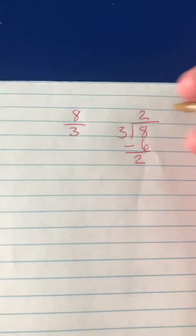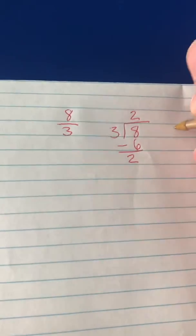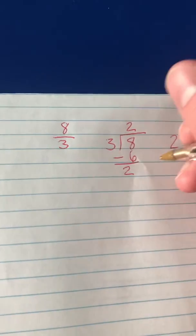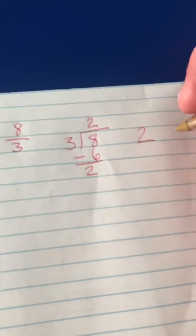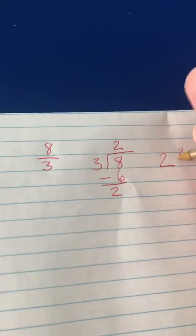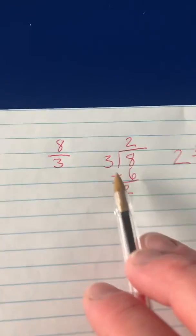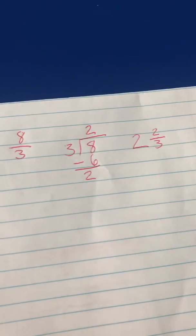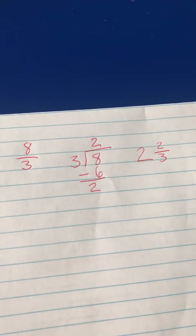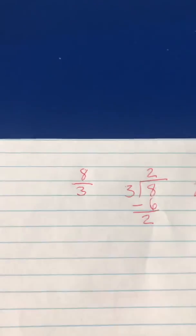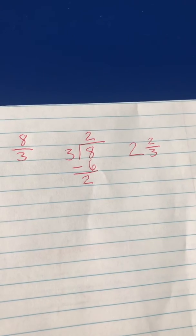So our answer, 8 thirds, can become a 2 with a remainder of 2 over our divisor, 3. We can always write our remainder as a fraction by putting the remainder over the number we divided by and making it a fraction. So that's all you do to change an improper fraction into a mixed number.